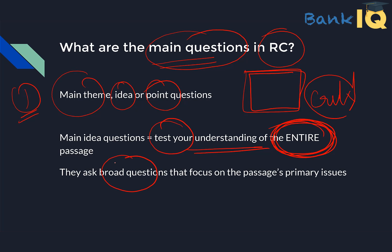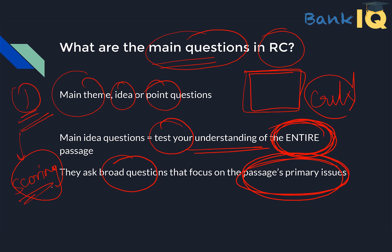These are broad questions based on primary issues. The first category is your main theme, idea or point questions. It is very scoring. If you read the whole passage, then obviously you will know what is happening in that passage.